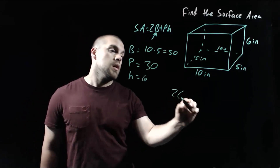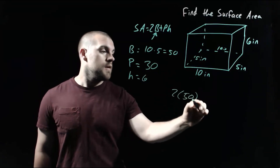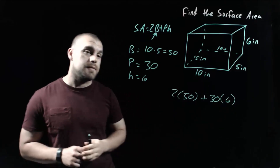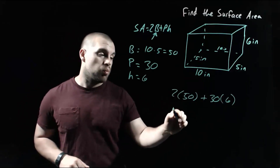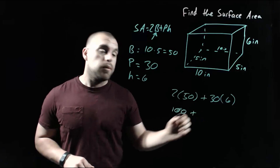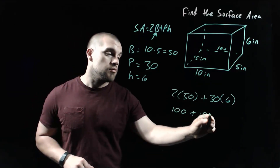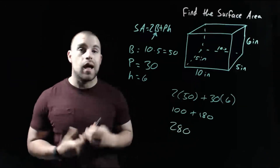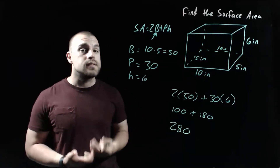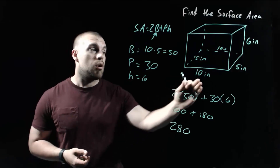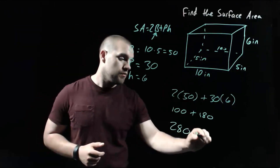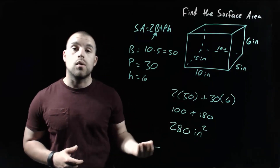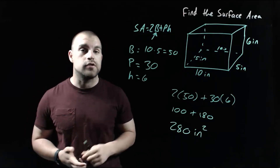Now we've got all the pieces to plug into our surface area formula. We're going to take 2 times the area of the base, which we found was 50, plus the perimeter of 30 times the height of 6. Two times 50 is 100, and 30 times 6 is 180. Adding those together, we end up with 280 as our surface area. Since this is area and all measurements were in inches, we label it 280 inches squared.